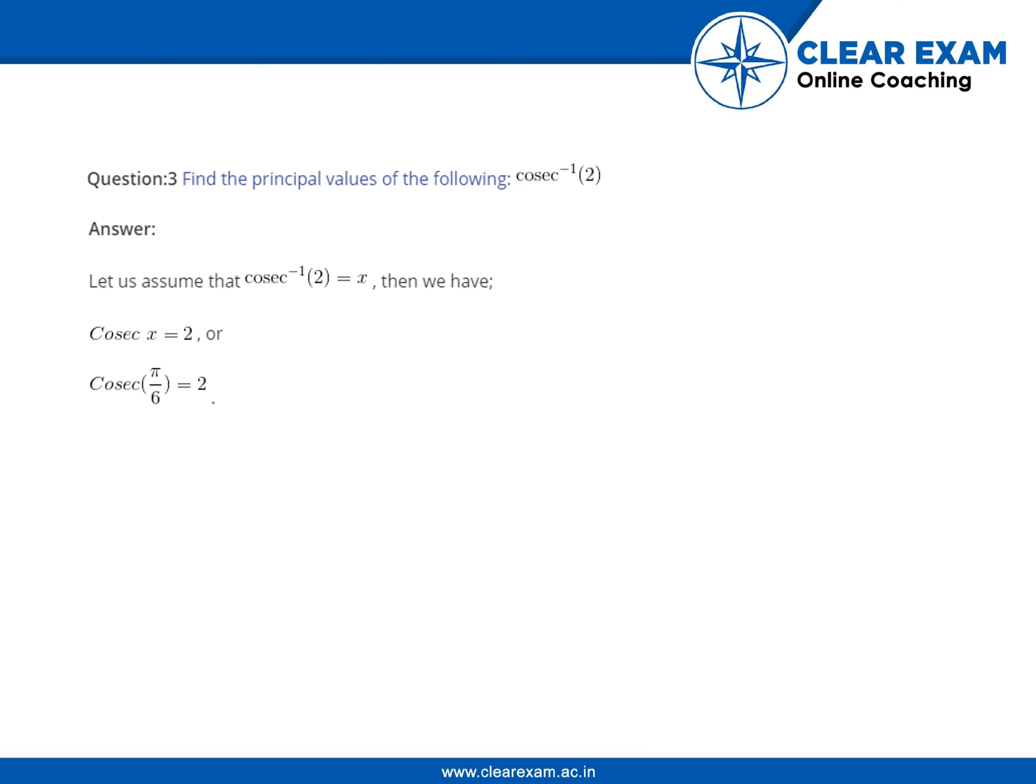Let's start. Let us assume that cosec inverse 2 equals x as we have done before. So, cosec x will be 2.